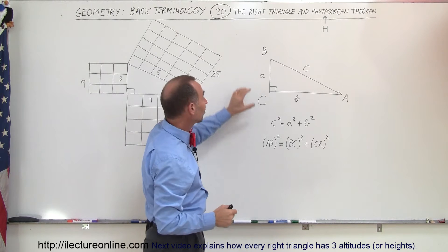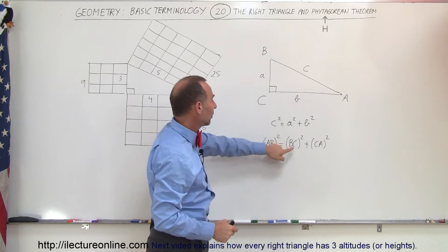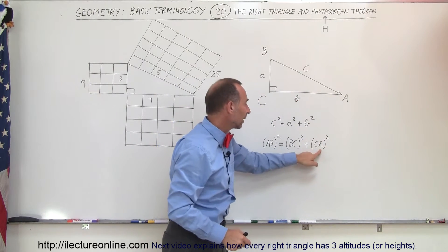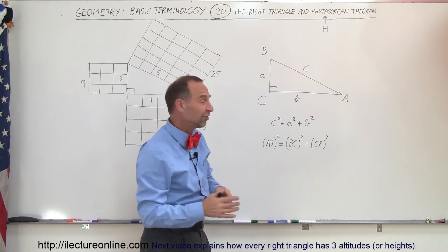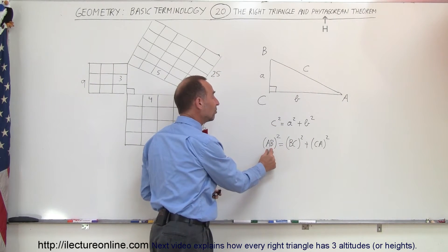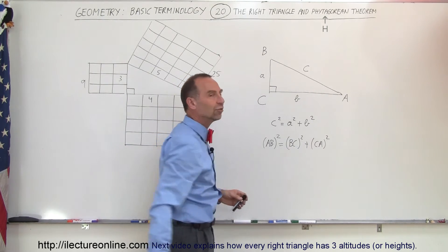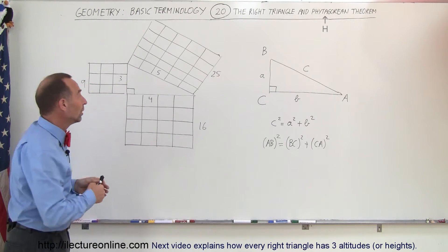In geometry, since the side A is the length from B to C, we can write it like this, and the side B is the length from C to A, which we can write like this, and the hypotenuse is the length from B to A, which we can write like this. We can therefore say that segment length AB squared is equal to segment length BC squared plus segment length CA squared.